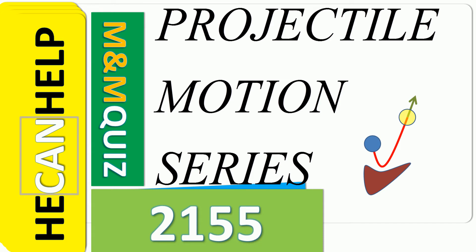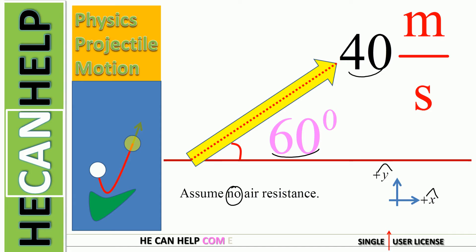Projectile Motion Series, M&M quiz, 2155. Welcome to He Can Help. We have 40 meters per second at an angle of 60 degrees with respect to horizontal.